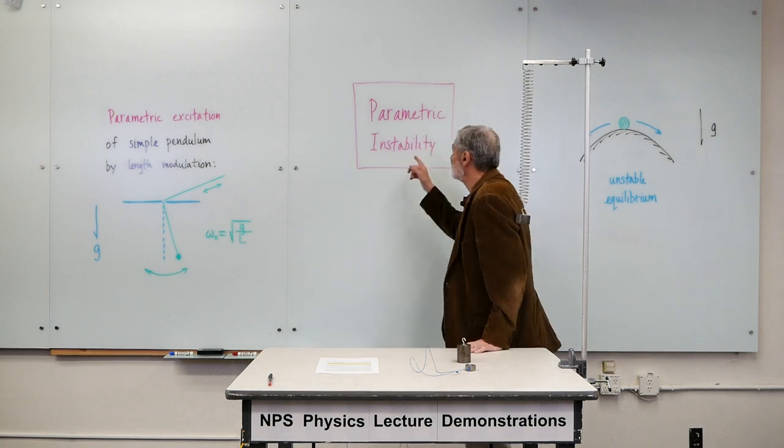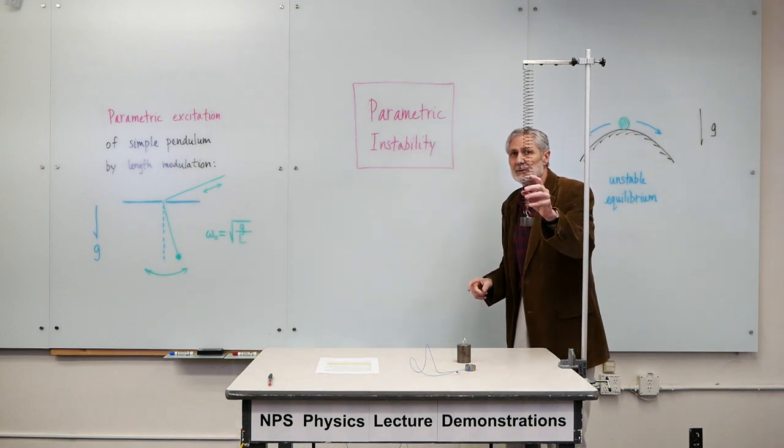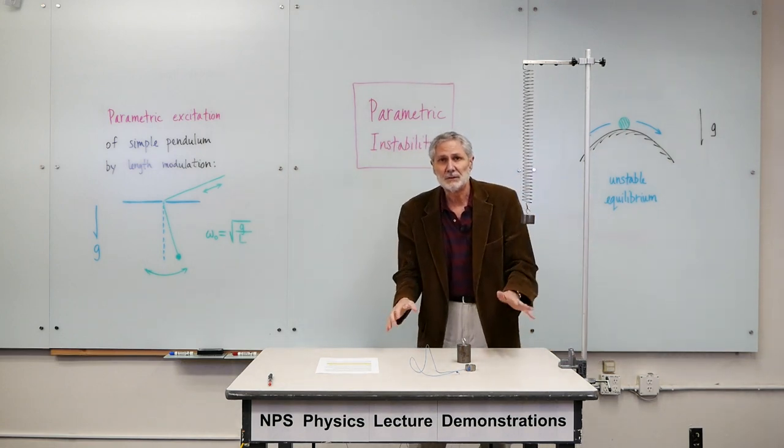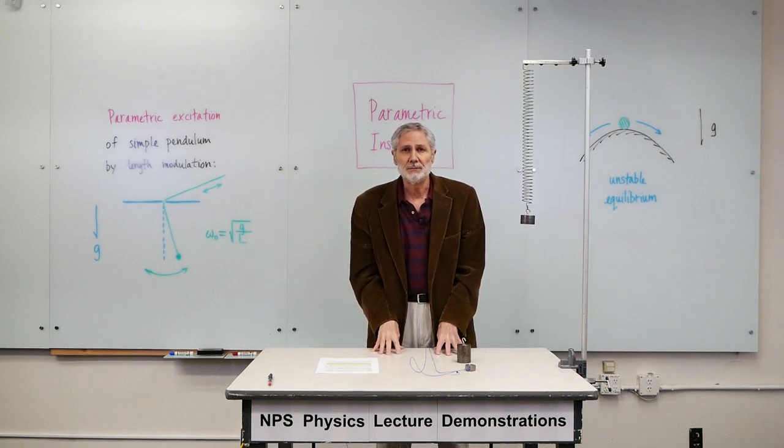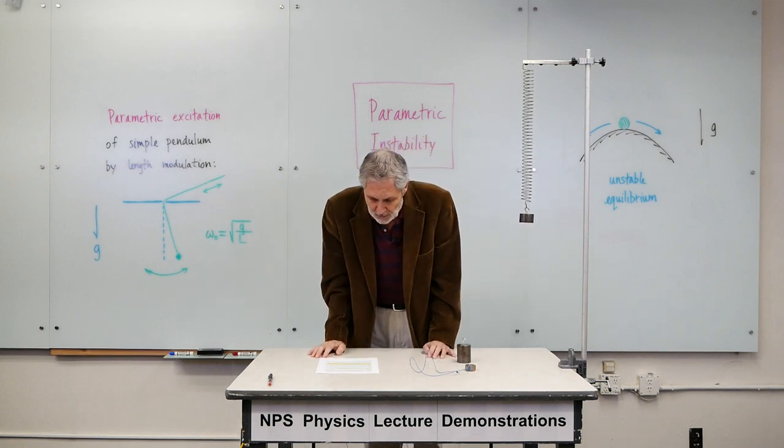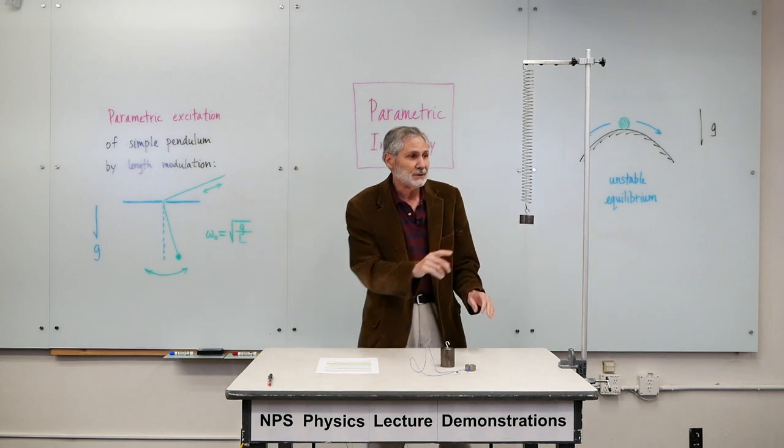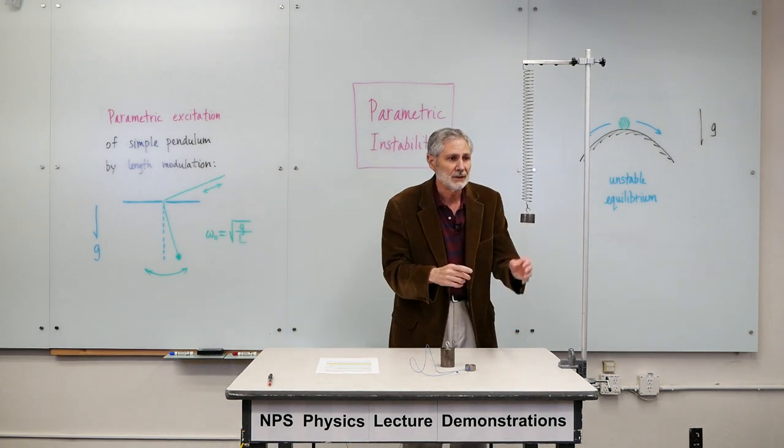So this parametric instability phenomenon that we saw in this example here, it's a general phenomenon. It occurs in many different types of systems of coupled oscillators. And one interesting example happens to be very similar to this.